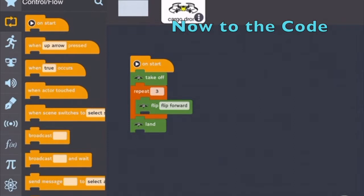So this is my code and as you can see for the drone to take off you need to start, on start button and then take off code. And for this particular code I'm going to flip forward three times and then land. So as you saw in the shot pretty cool.